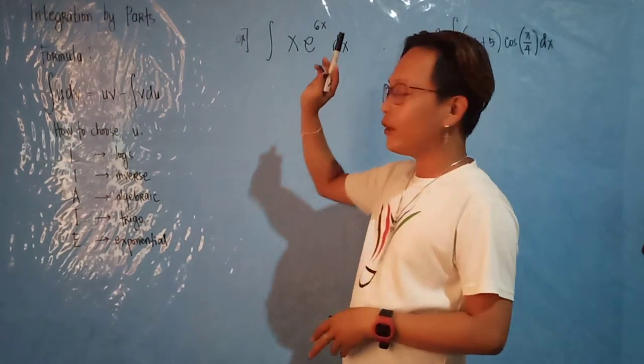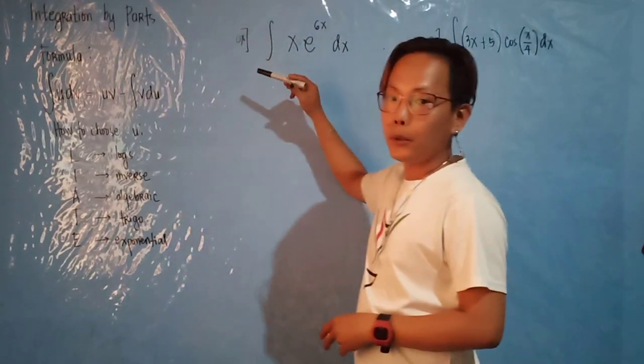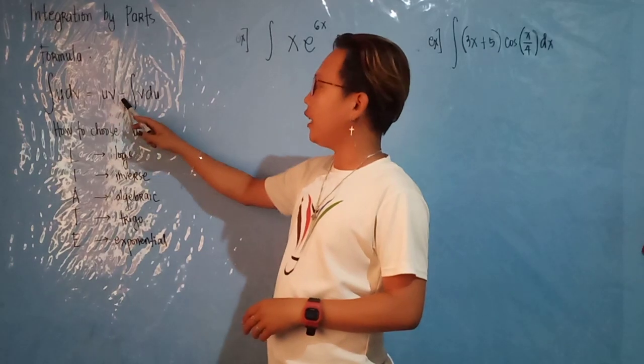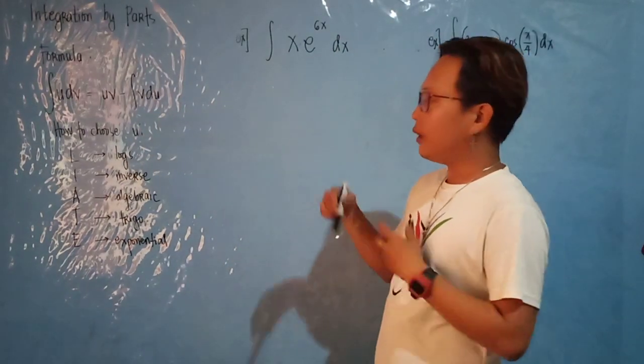Then we have to follow the formula, which is the integral of u dv, wherein you have uv minus the integral of v du.